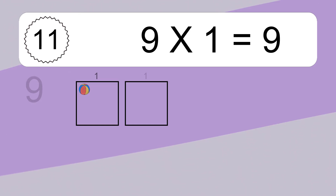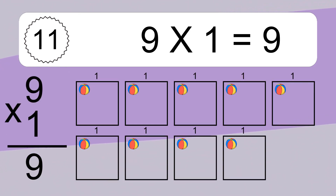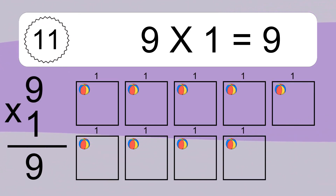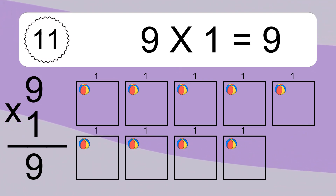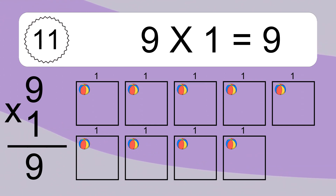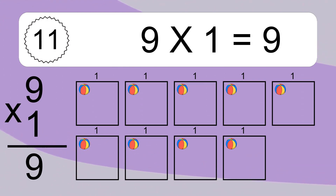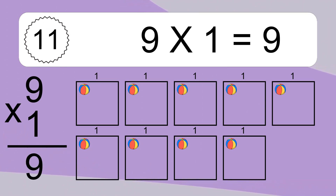9 times 1 equals 9. We have 9 boxes, and each box has 1 colorful ball inside. If you count all the balls in all the boxes together, you will have 9 times 1 balls. This equals 9 balls.